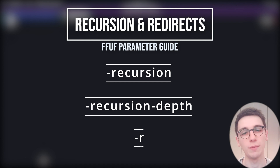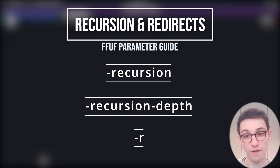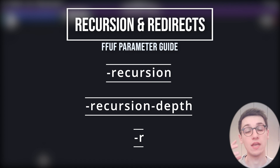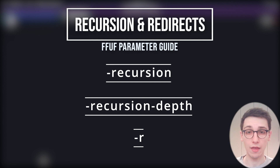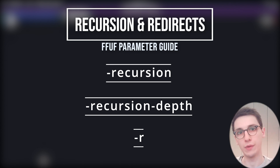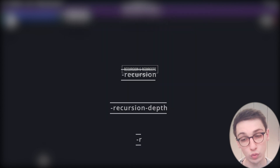With -r you can tell FFUF to follow redirects. This is useful because you'll often get 301 status codes back — 301 meaning redirect to a specific page — and with this option FFUF will actually follow that redirect so you can see where it goes.